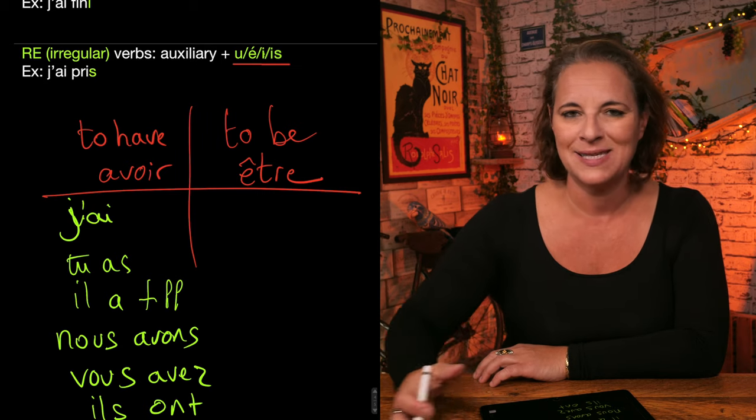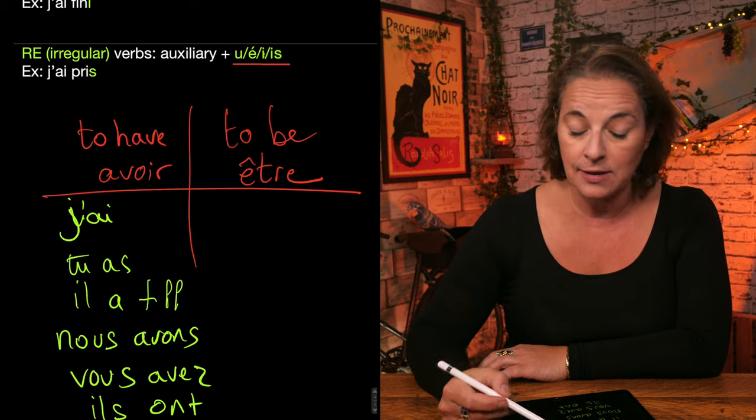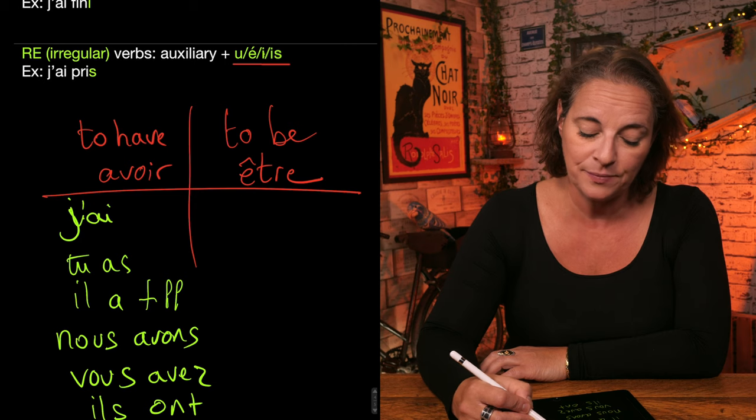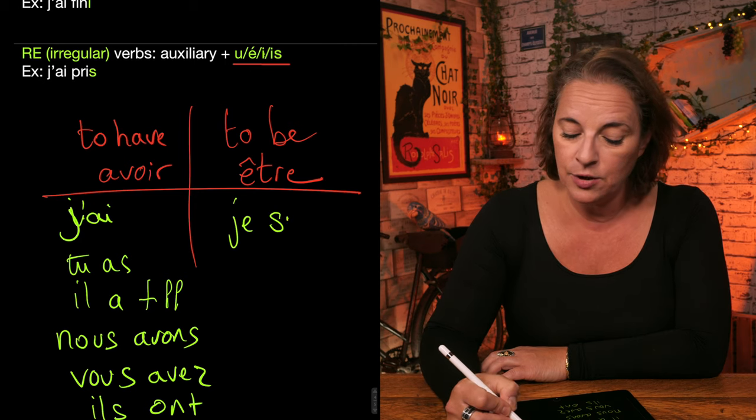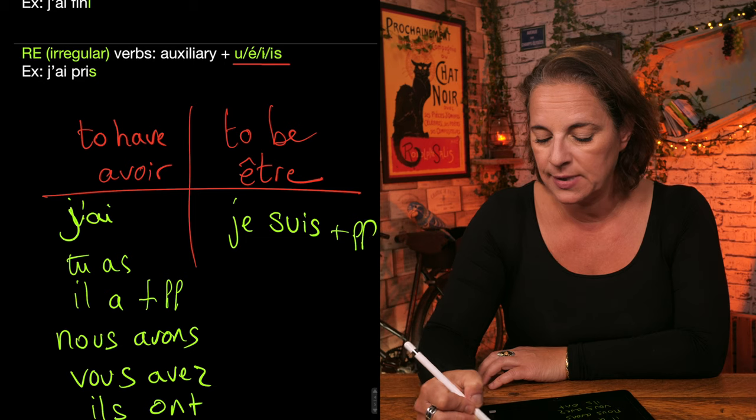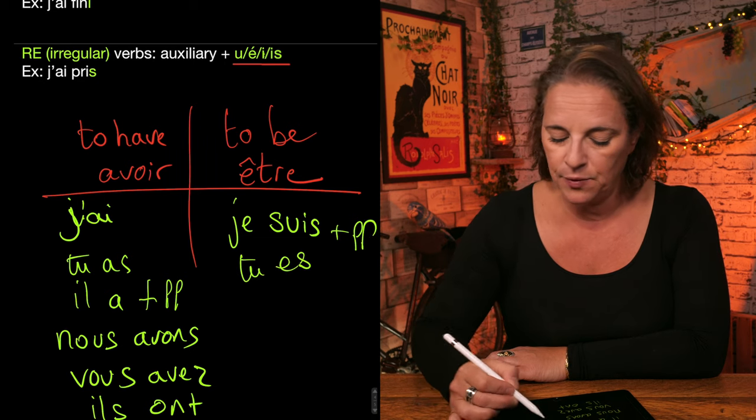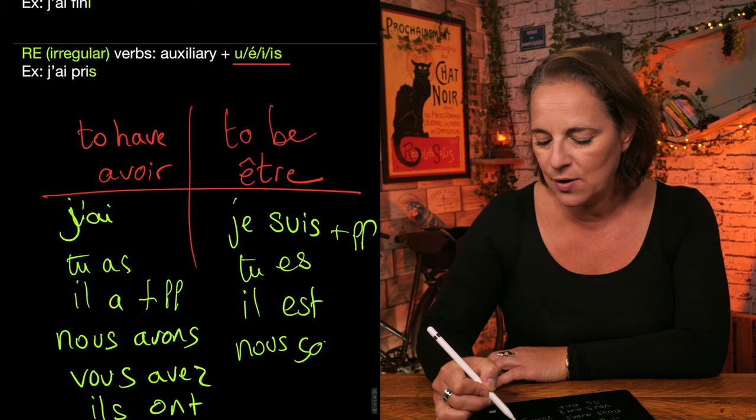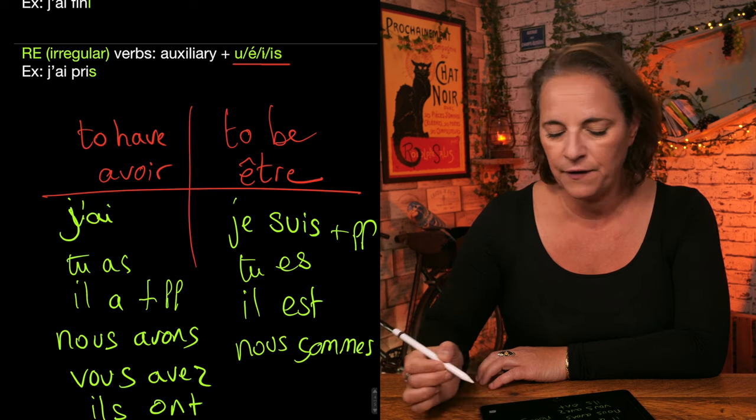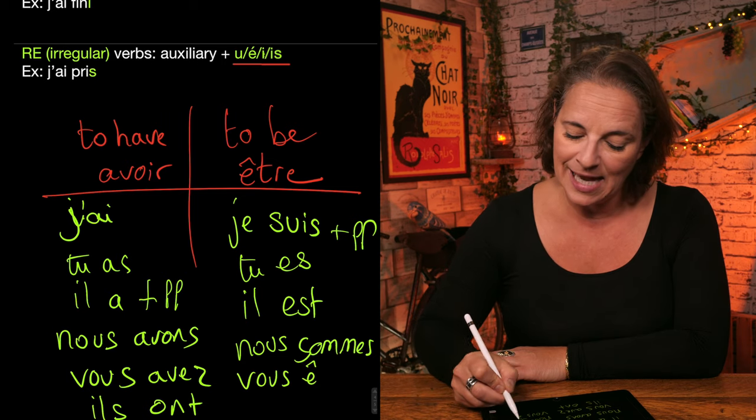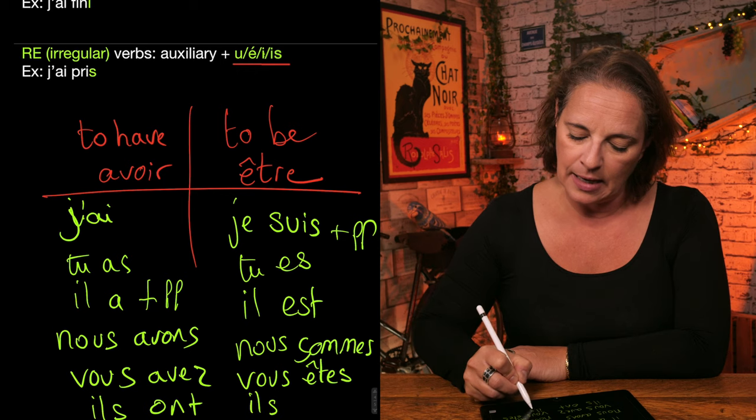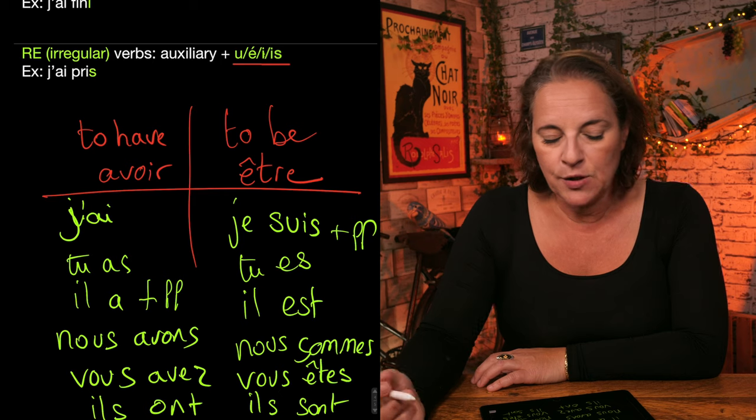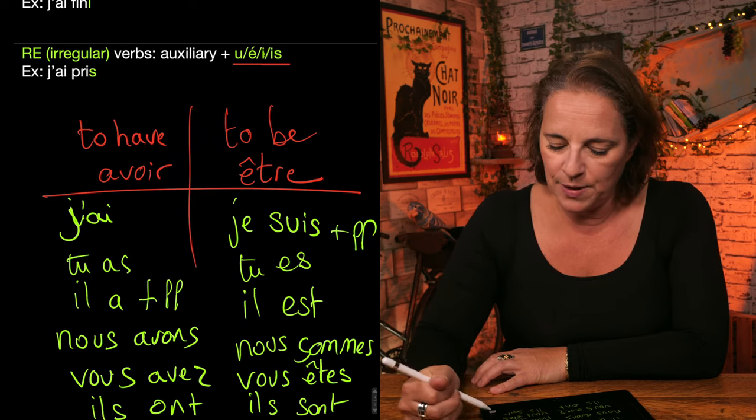For être, because some verbs are conjugated with être in the passé composé, then it would be to be in the present tense. So je suis plus past participle. Tu es plus past participle. Il, elle, on a. Nous sommes. Again, you need to learn this by heart if you are not familiar with that. So vous êtes. And il, elle, sont. Plus past participle.